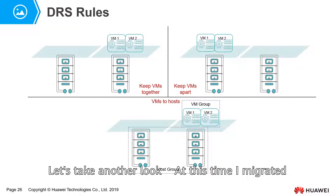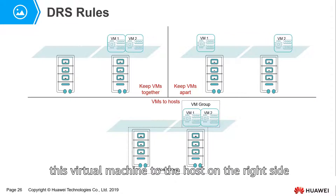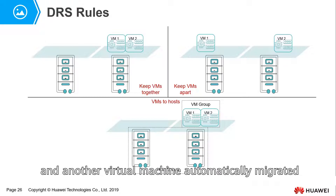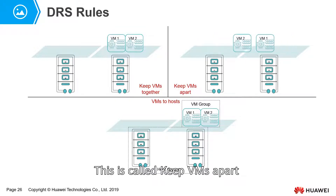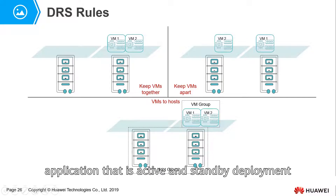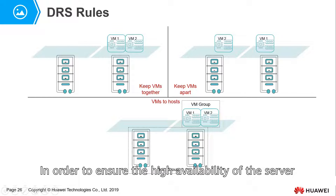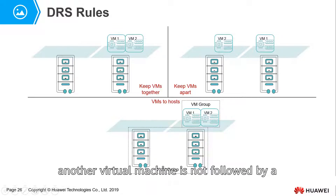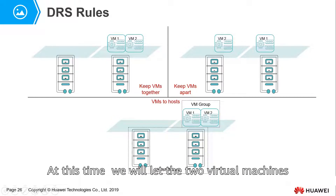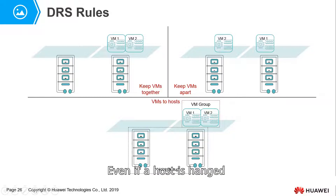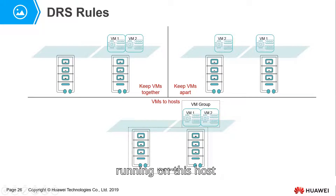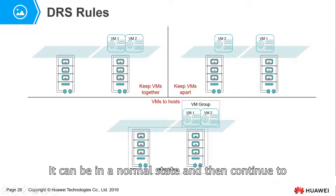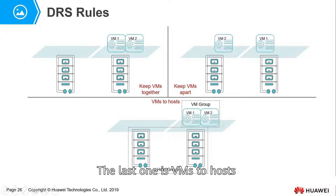In the diagram, if I migrate one virtual machine to the host on the right side, the other virtual machine automatically migrates to the left side. This is keep VMs apart. The specific application is for active/standby deployments: to ensure high availability, the active and standby virtual machines are placed on different hosts. Even if one host fails, the other virtual machine on a different host remains in a normal state and continues to provide service.